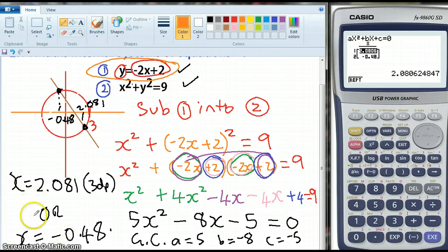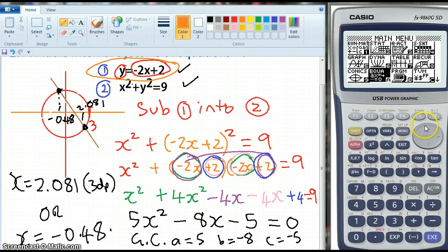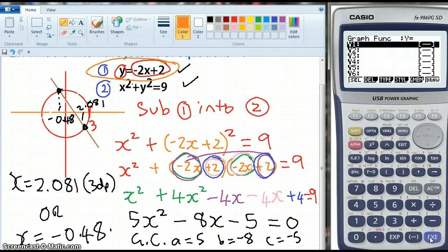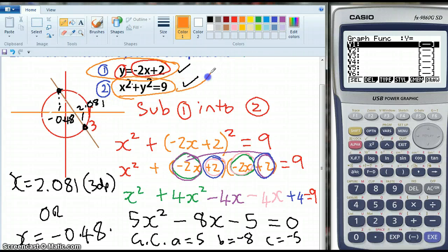So, I'll do the working for that in a minute but what I'll also show you is that if I go into graph, what I can graph is the top part of the circle. So if I look at the circle, how do I make y the subject?